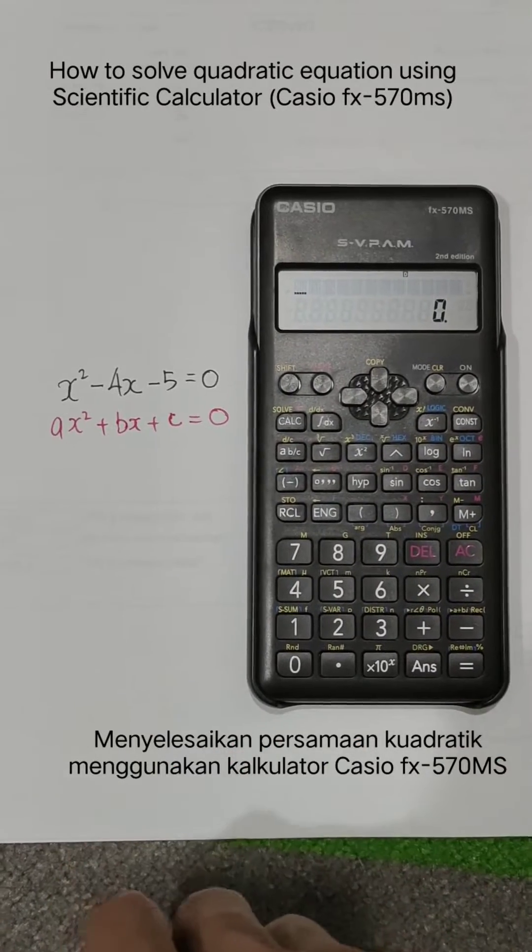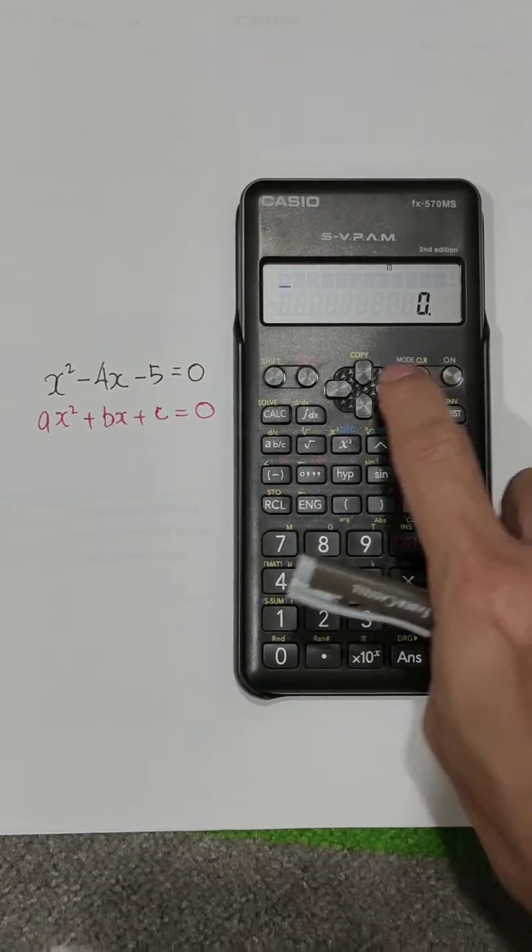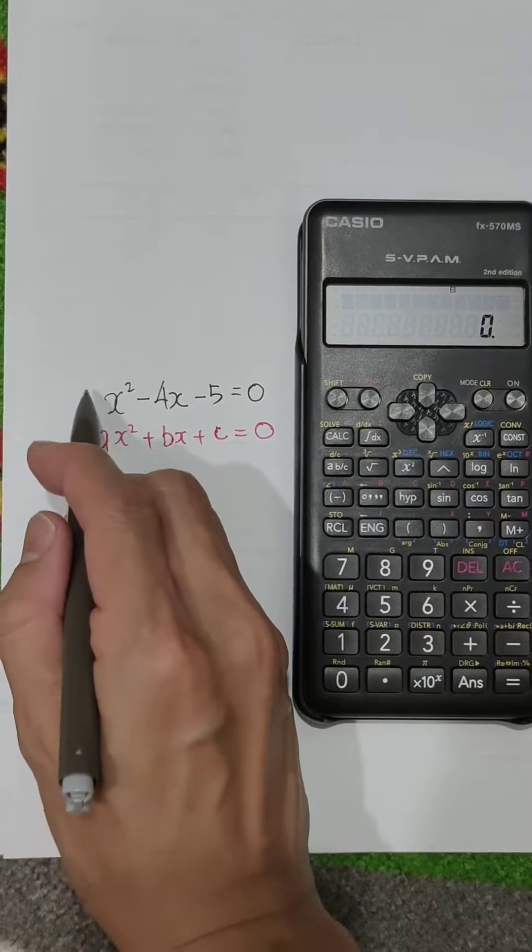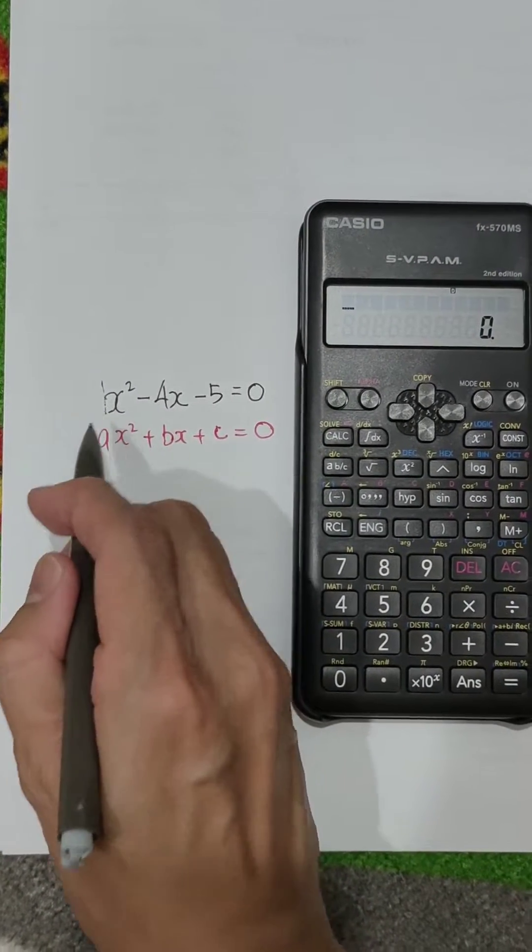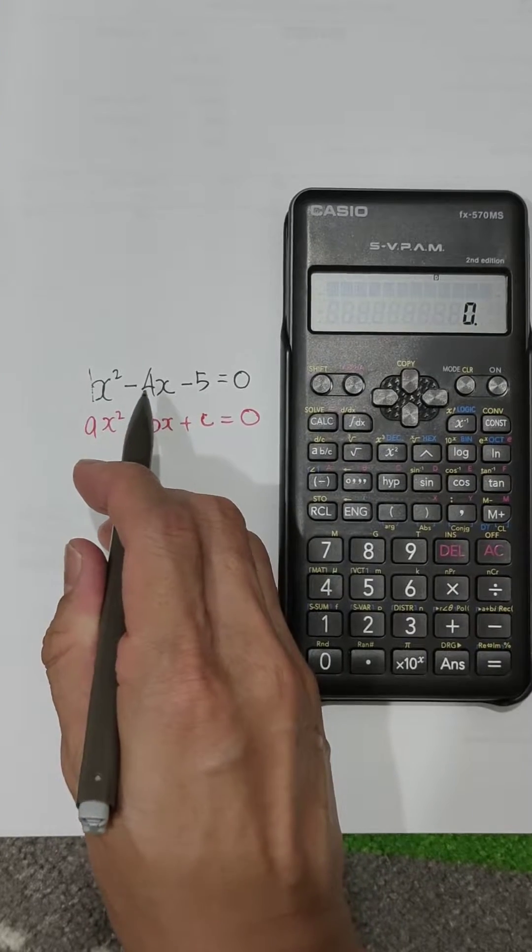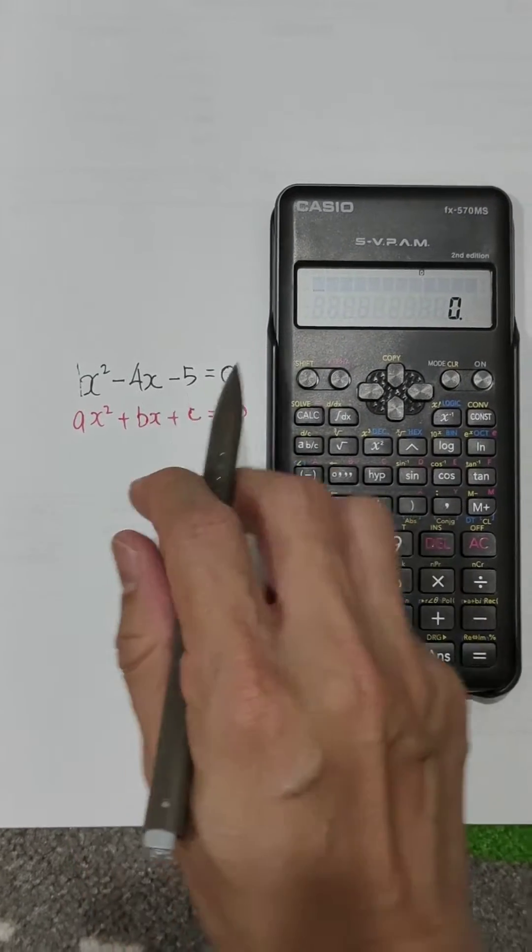This is a video on how to solve the quadratic equation using the calculator. From here you can see that A is 1. If they didn't write it, it means there's a 1 there. A is 1, B is negative 4, C is negative 5.